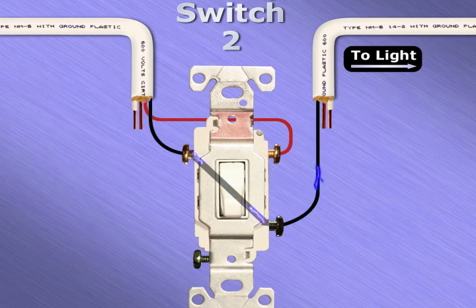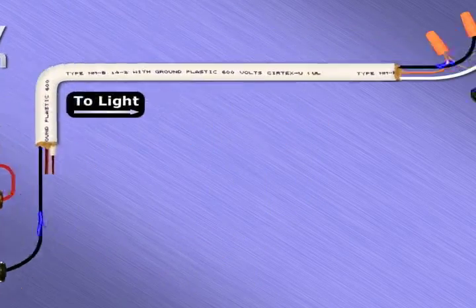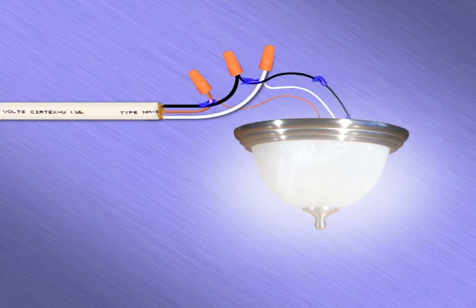In this case, the current has an unobstructed path through the circuit to reach and illuminate the light.